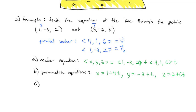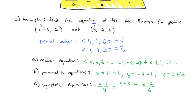We can then solve each equation for t to find the symmetric equation form. We get (x minus 1) over 4 equals t, equals (y plus 3) over 1, equals (z minus 2) over 6 — all equal to t. So we have three different ways to represent this same line: vector form, parametric form, or symmetric form. This gives us the equation of the line that connects the two points.